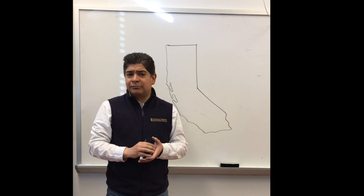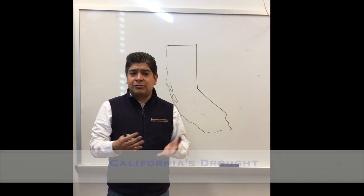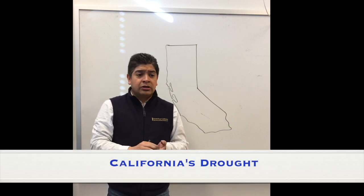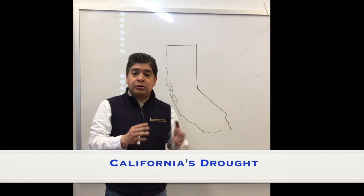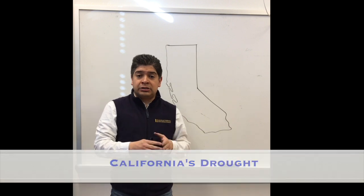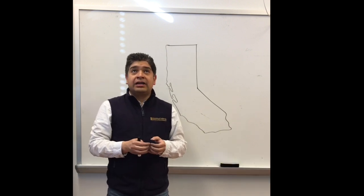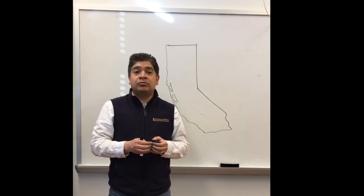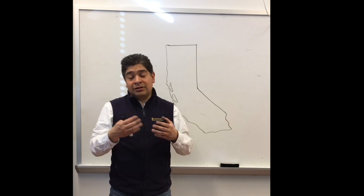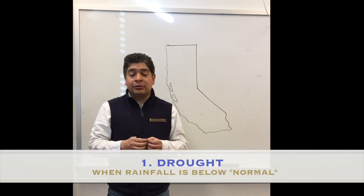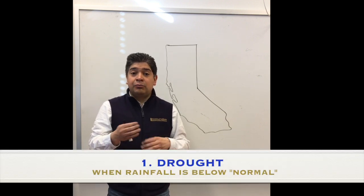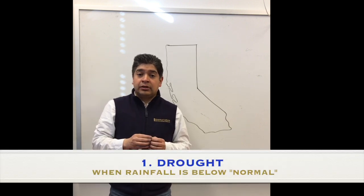Let's start with the basics. What is the drought? When we accumulate the precipitation in a year and it is below normal — and I'm going to define normal — then we're in a drought.